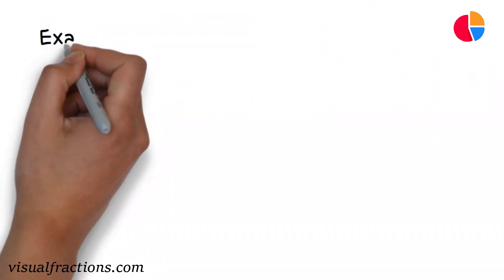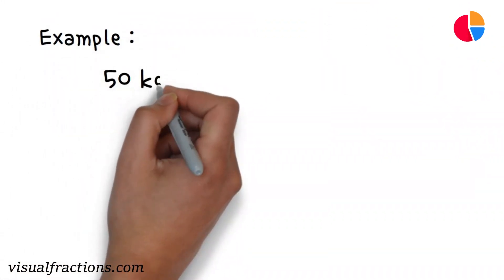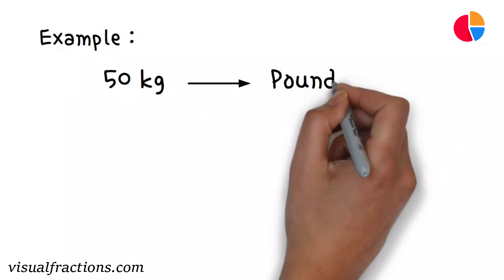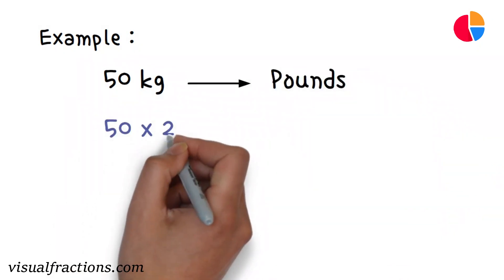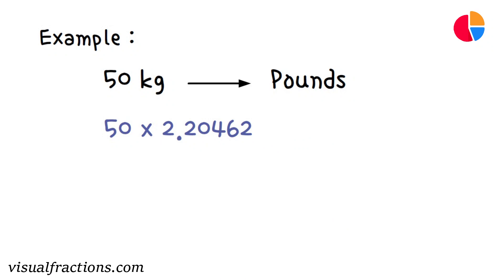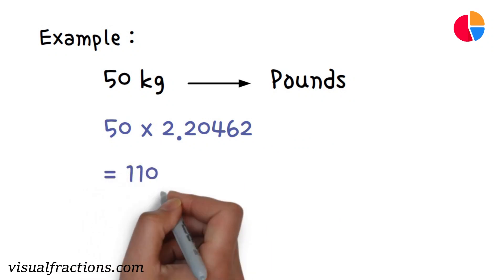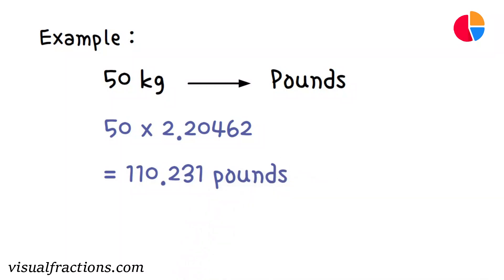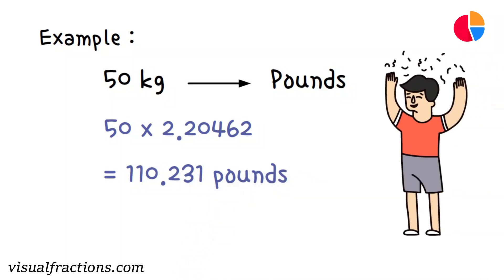Let's walk through an example. Say you have 50 kilograms that you need to convert to pounds. We start by multiplying 50 by the conversion factor of 2.20462. This gives us 110.231 pounds. And that's it, we're done.